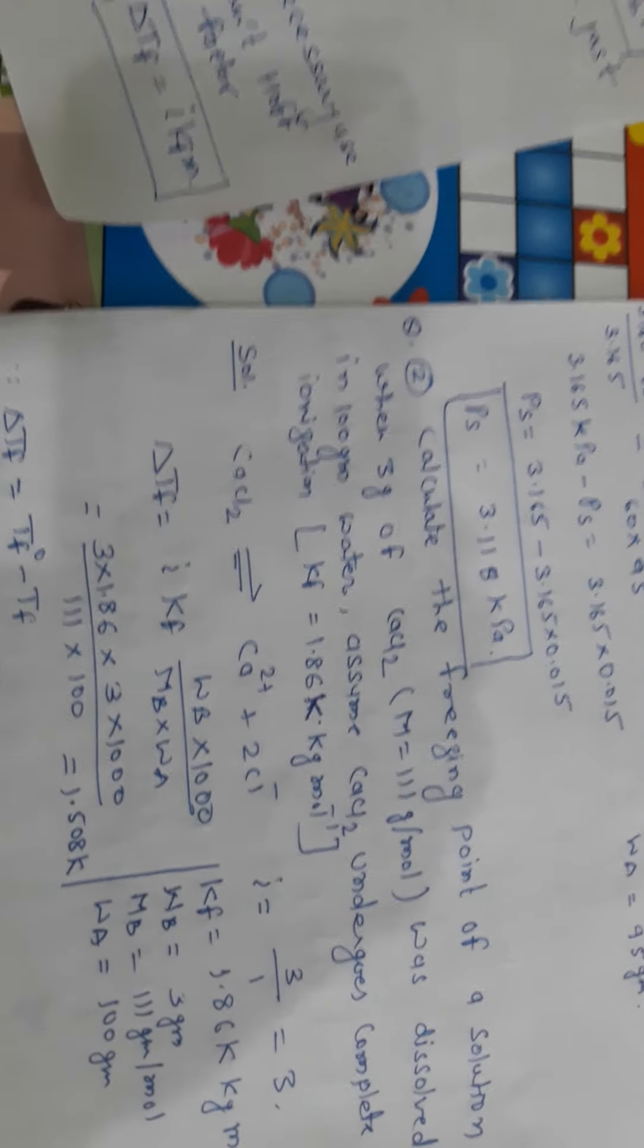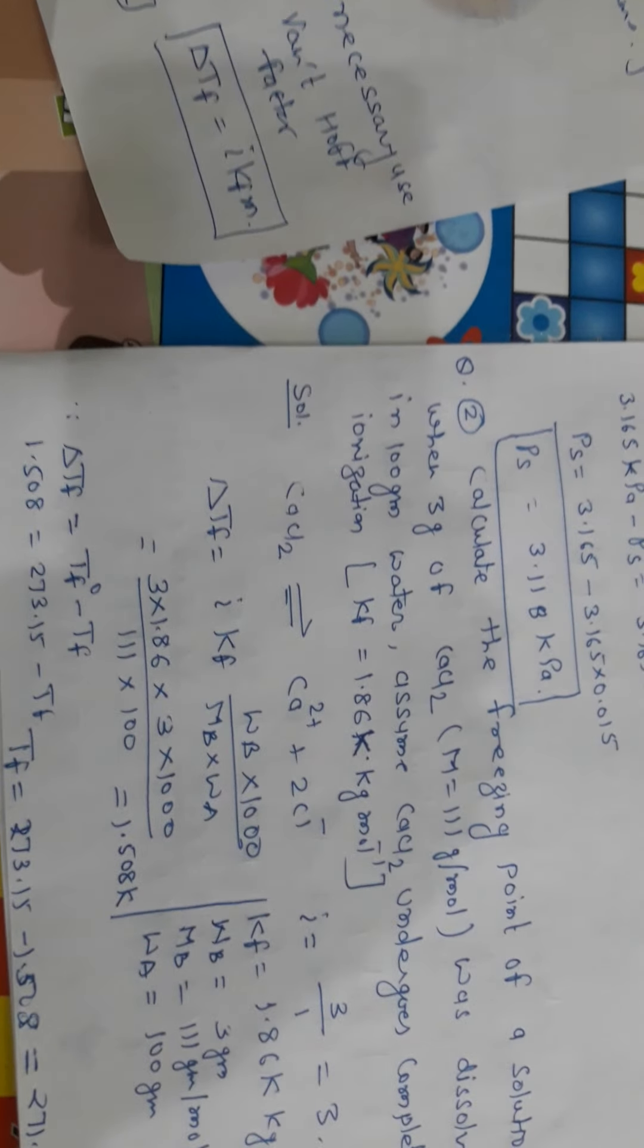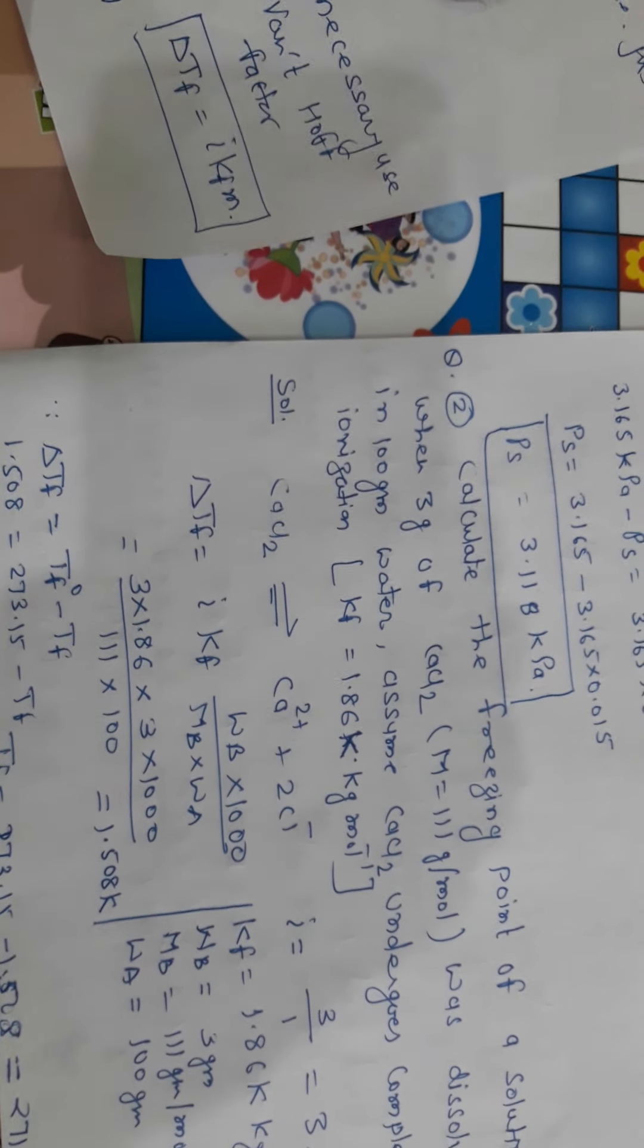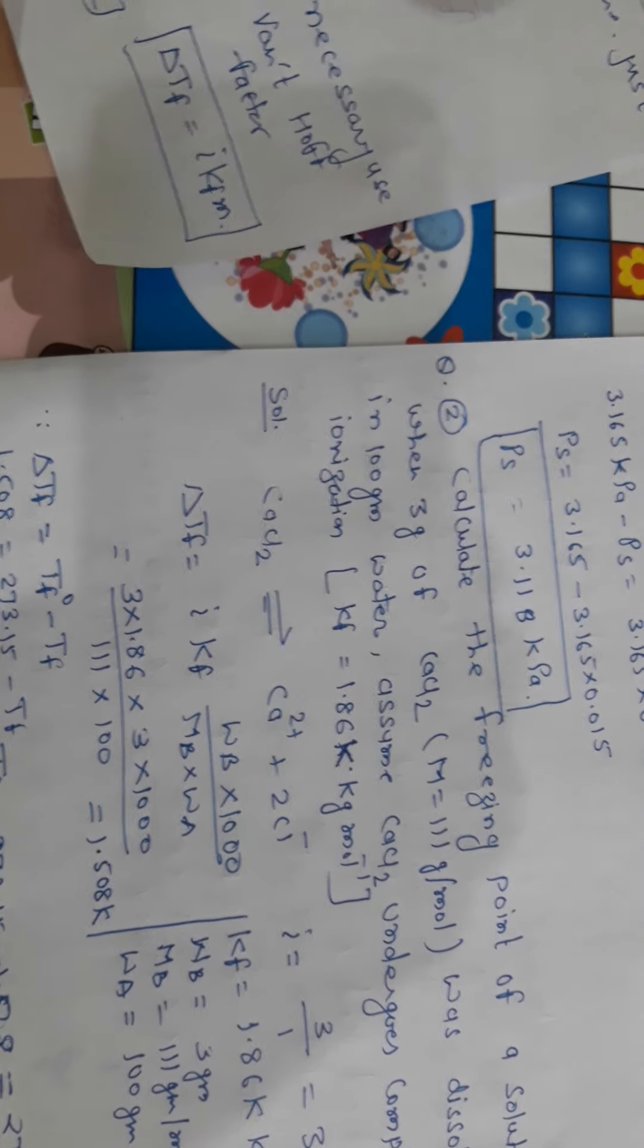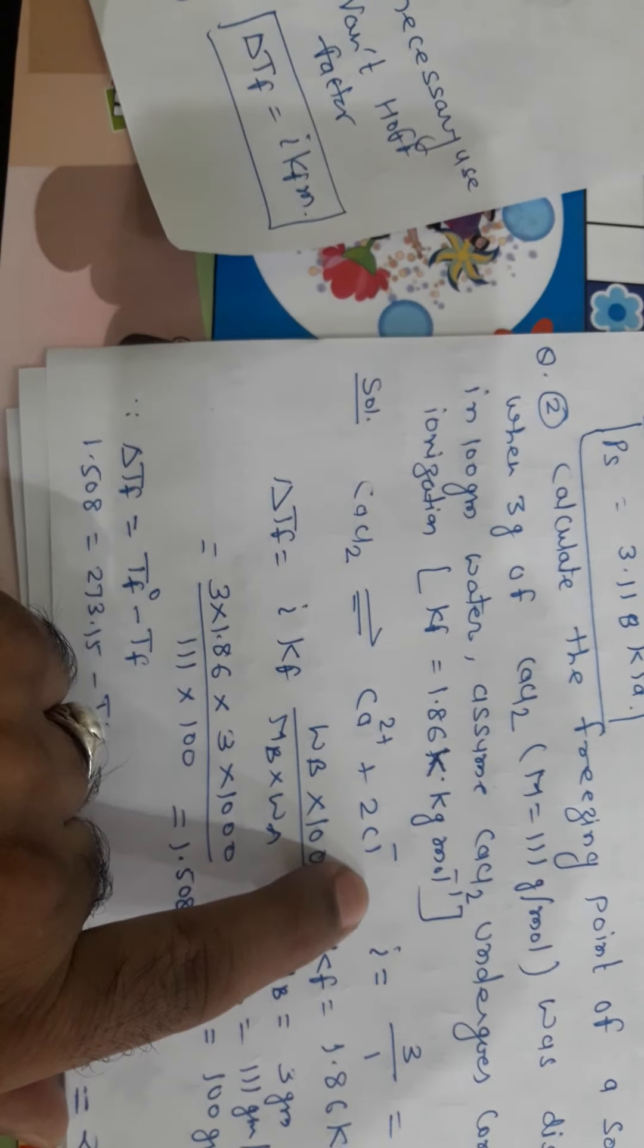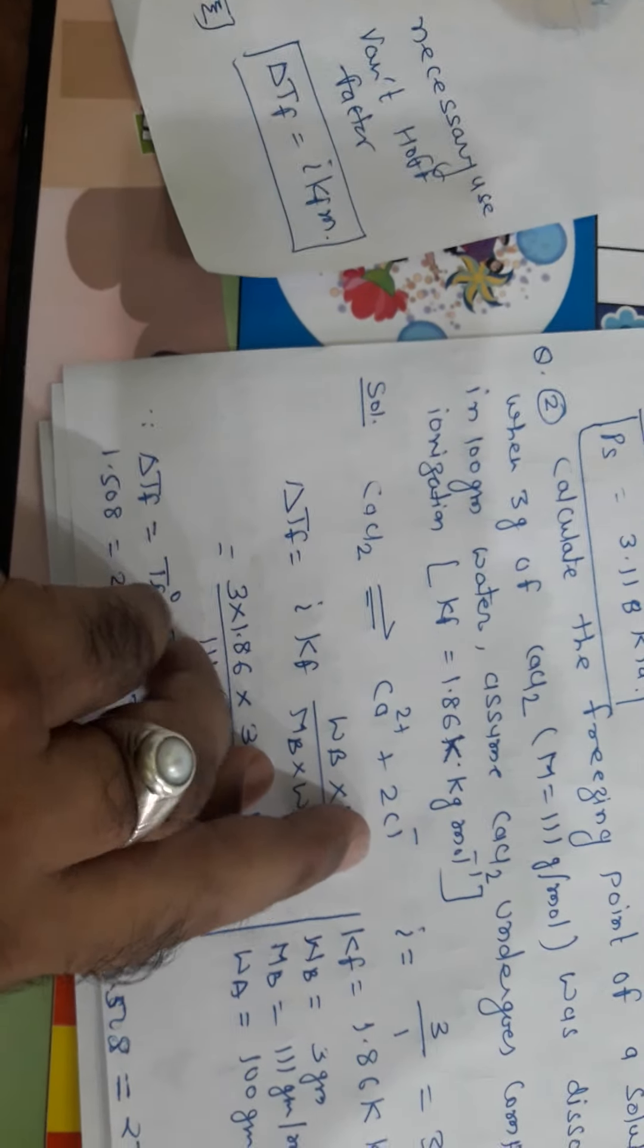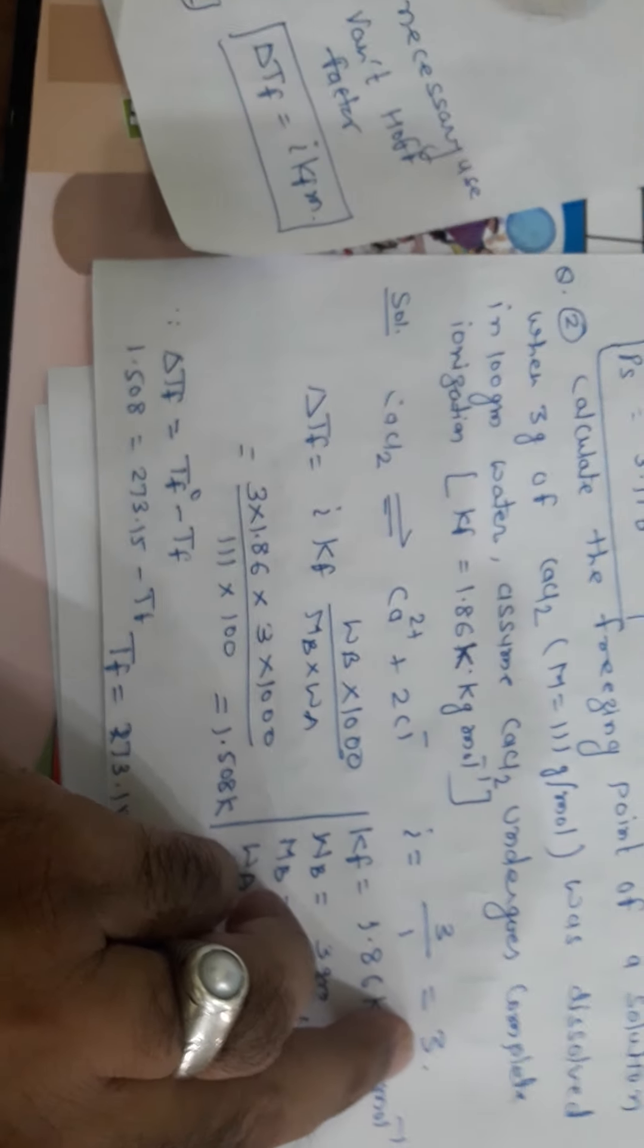I will be found out, I can be found out by using this. I is equal to number of particles or number of moles after the dissociation or association upon number of moles before the dissociation or association. When CaCl2 is dissociated, we will get Ca2+ and 2Cl-. The total mole after the dissociation is 1 plus 2, 3. When 3 is divided by moles before dissociation, it is 1. 3 by 1 result will be 3. The value of I is 3.